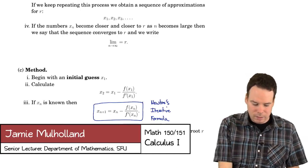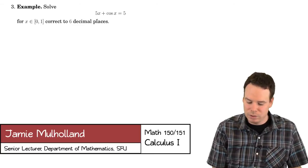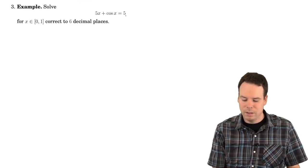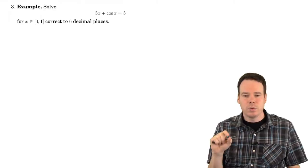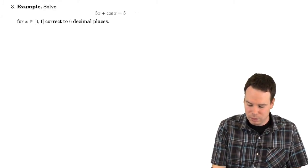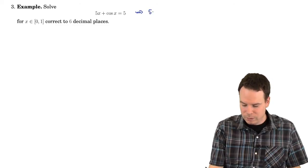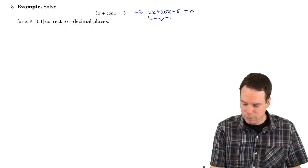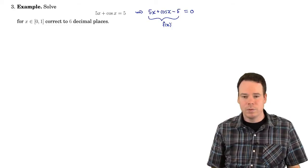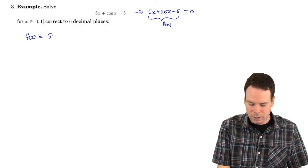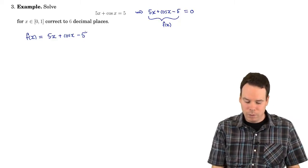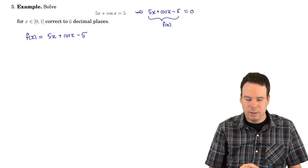Let's have a look at how this works in practice. We're asked to solve the equation 5x plus cos(x) equals 5. Newton's method is used to find roots of functions, so since we're asked to solve an equation, the first thing we should do is push everything to one side: 5x plus cos(x) minus 5 equals 0. We'll call this our function, because now we've converted it to a question about finding a root. We want to find a root in the interval 0 to 1, to 6 decimal places.